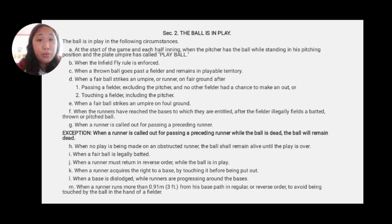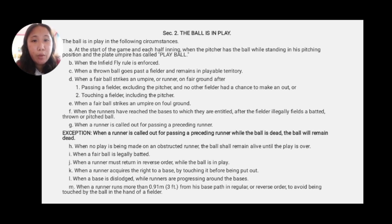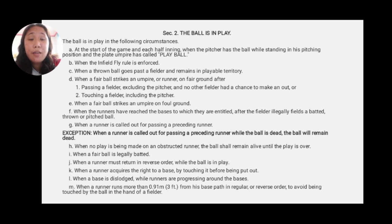Next is Section 2 in Rule 9: the ball is in play. The ball is in play in the following circumstances. At the start of the game and each half inning when the pitcher has the ball while standing at his pitching position and the plate umpire has called play ball. When the infield fly rule is enforced. When a thrown ball goes past a fielder and remains in playable territory. Letter D: when a fair ball strikes an umpire or a runner on fair ground — two situations: number 1, passing a fielder excluding the pitcher and no other fielder had a chance to make an out; or number 2, touching a fielder including the pitcher.